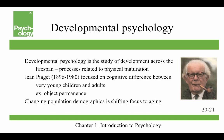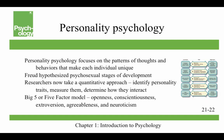Developmental psychology is the study of development across the lifespan and the processes related to physical maturation. In the picture, that's Jean Piaget, who focused on the cognitive differences between very young children and adults — for example, his idea of object permanence, which is when we realize things continue to exist even when hidden from us. Changing population demographics are shifting the focus in developmental psychology toward aging: by the year 2050, 90 million people in America will be 65 or older.